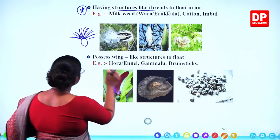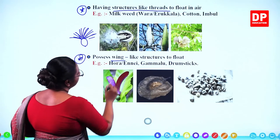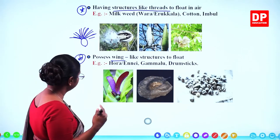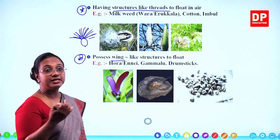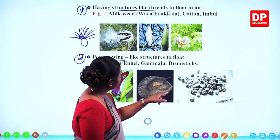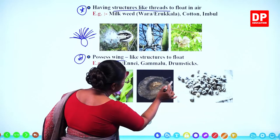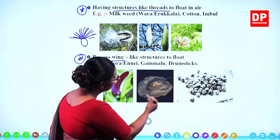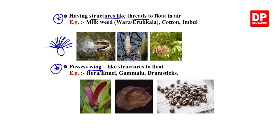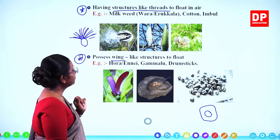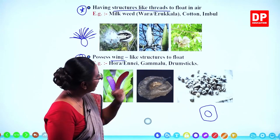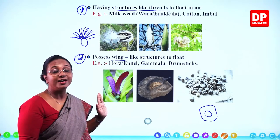The second adaptation for wind dispersal is wing-like structures to float. Examples include hora seed, where the seed is in the middle and wing-like structures surround it. Gammalu also has the seed in the middle with a wing-like outer structure. Drumstick seeds have a thin membrane-like wing structure around the seed. All these are examples of seeds that possess wings for wind dispersal.